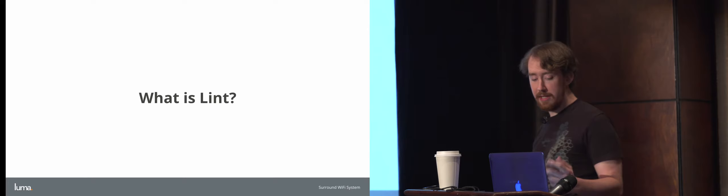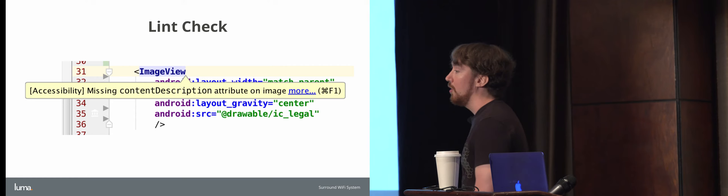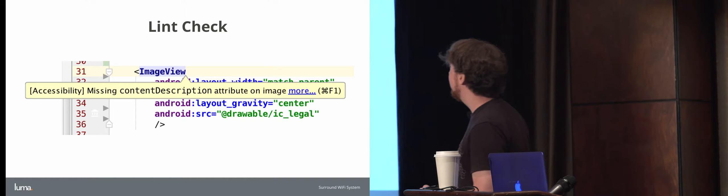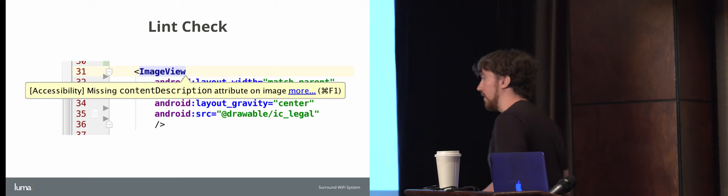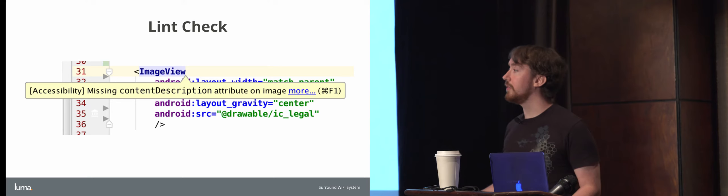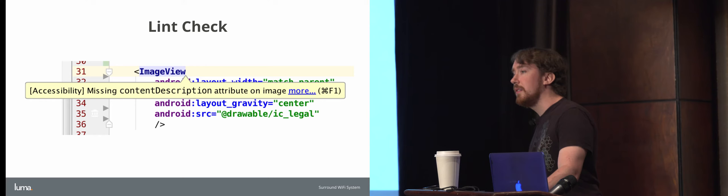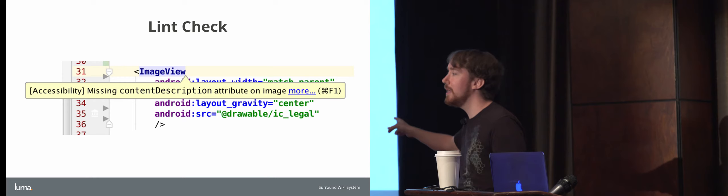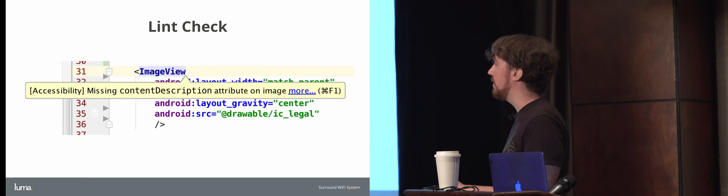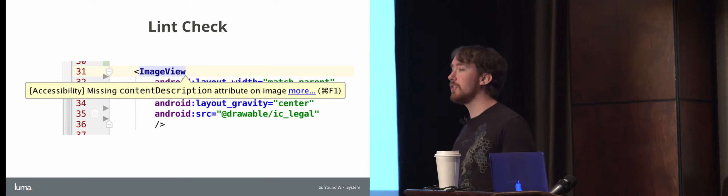A great example, leading from Kelly's talk, is content descriptions. You're probably familiar with this Lint check — it's saying, hey, you have an image view or image button and you didn't give any sort of accessibility description along with it. As Kelly showed us, accessibility is important. This is one of those details that a lot of developers might otherwise miss or gloss over, or relegate to the back of their backlog. Lint has a fairly tight integration to Android Studio — it'll pop up and yell at you. Sometimes you can even option-enter and it'll fix it for you automatically, though not always.